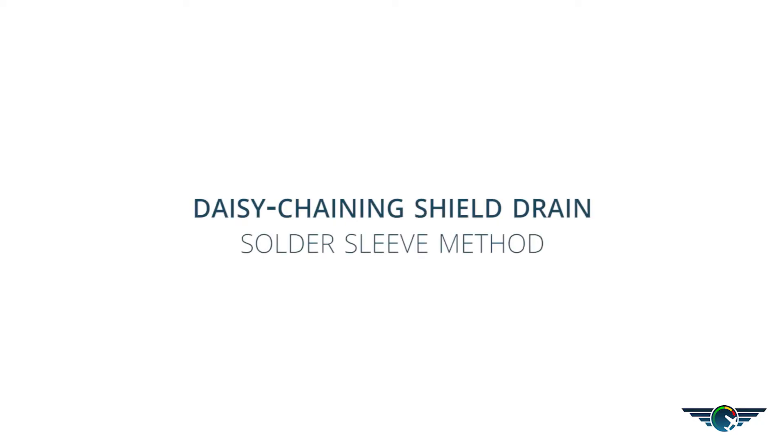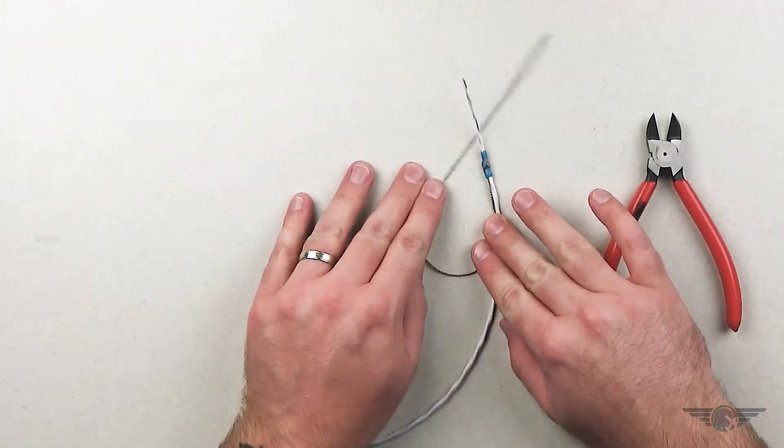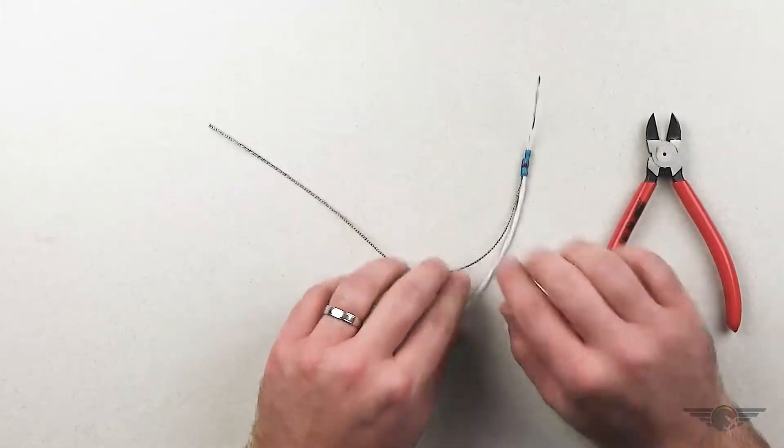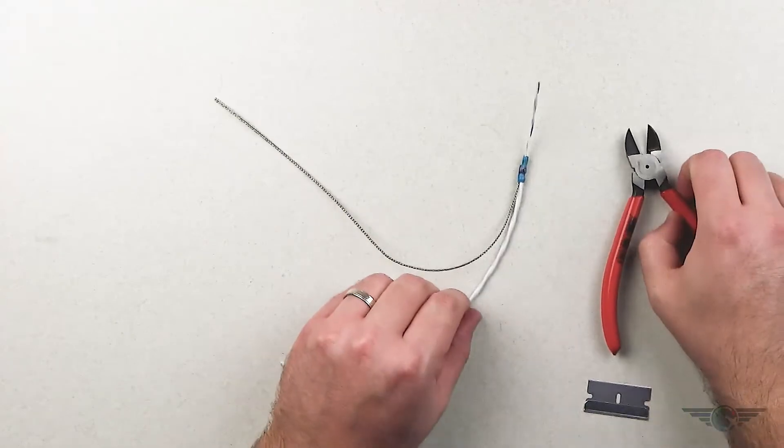I'm going to show you guys how to terminate your shield drain or your shield block using these solder sleeves, and we're going to daisy chain it together with another piece of CAN bus.